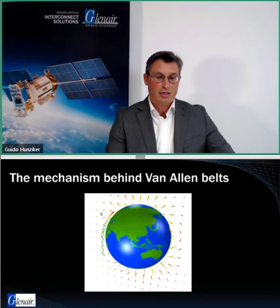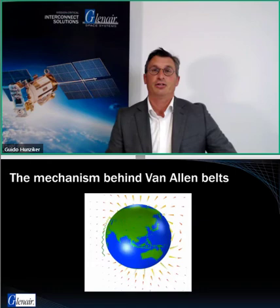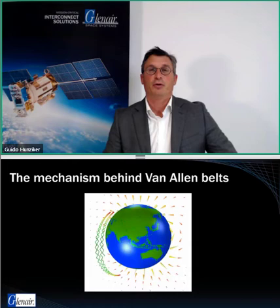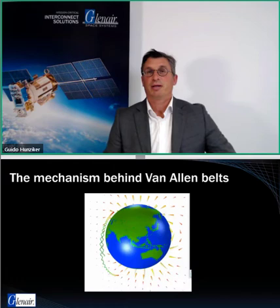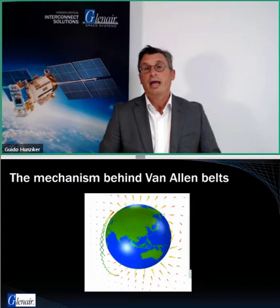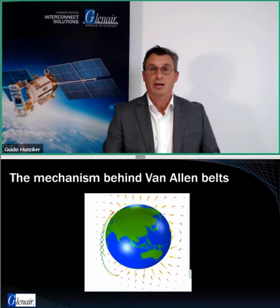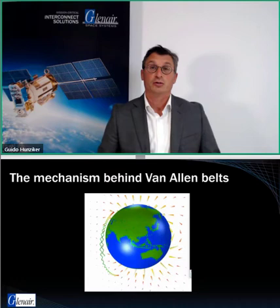A particle caught in the Van Allen belts bounces back and forth along the magnetic field lines — when those lines get closer together, it acts like a mirror. Once trapped, a particle can bounce around for a very long time, escaping only occasionally. This means these areas accumulate a large amount of charged particles. If a satellite constantly rotates through these zones, that has an impact on the spacecraft that needs to be considered.